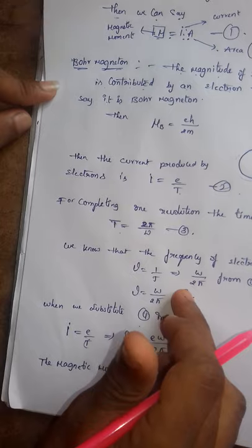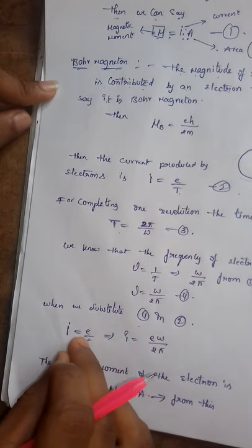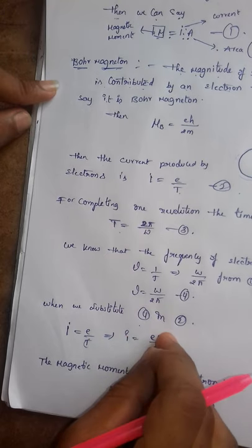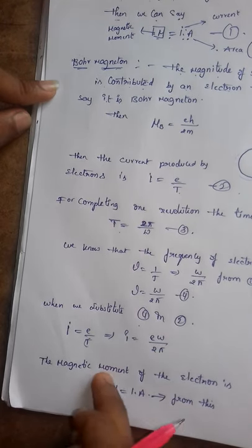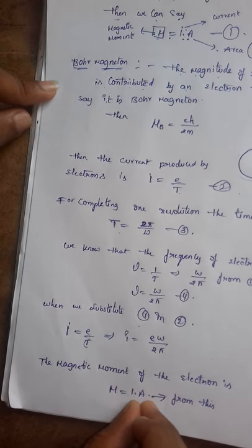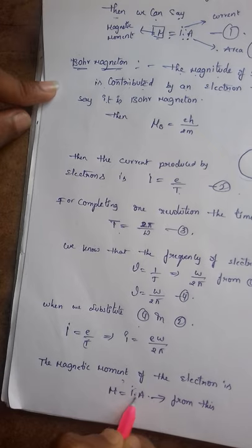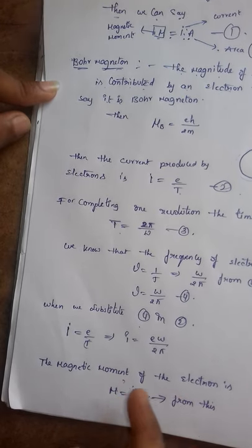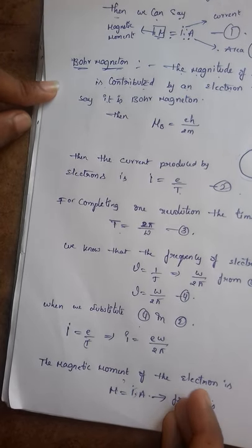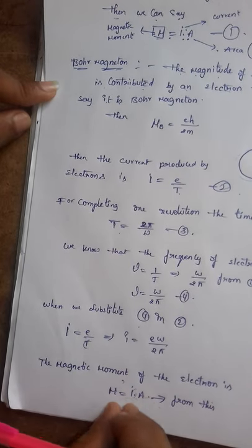When we substitute the fourth equation in equation two, then we can write I equals to E omega by 2π. The magnetic moment of the electron is M equals to I times A, where I is the current and A is the area. When current flows through a wire with a cross-sectional area, we get the magnetic moment.